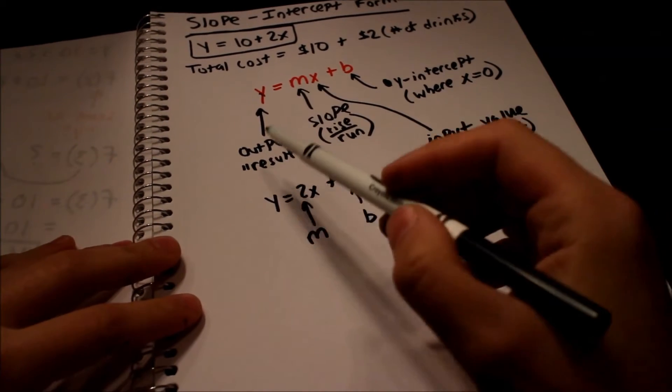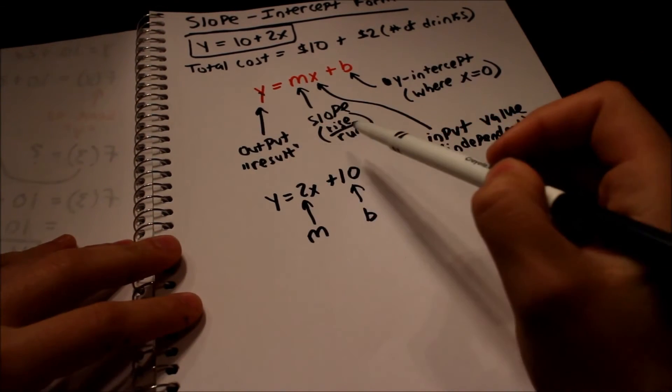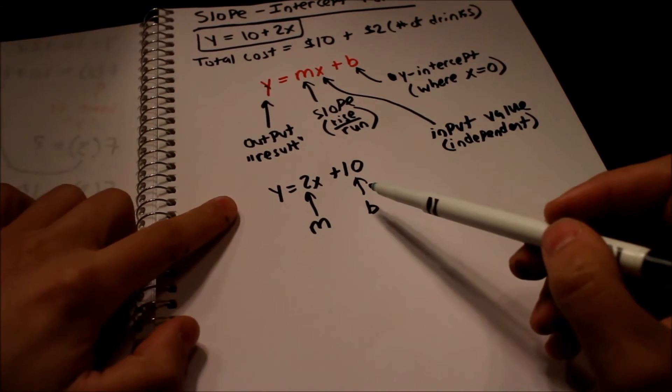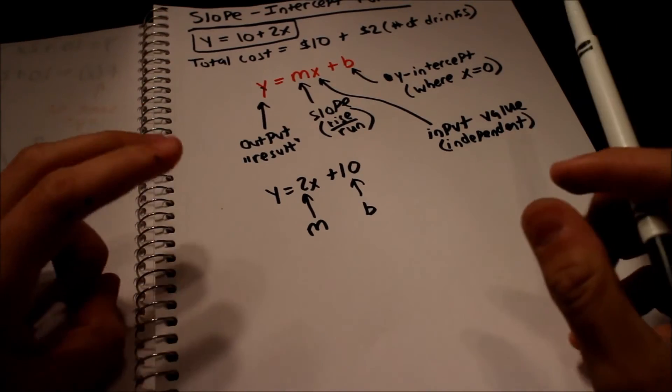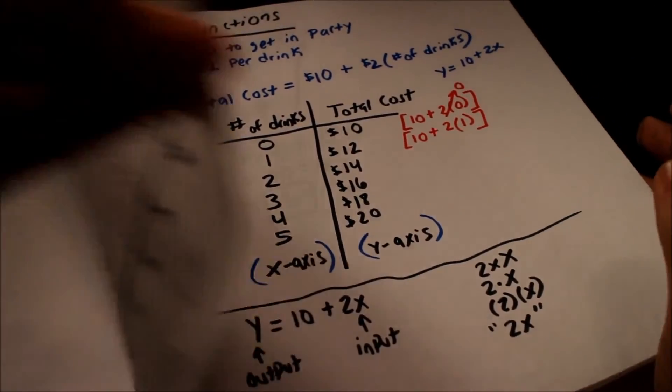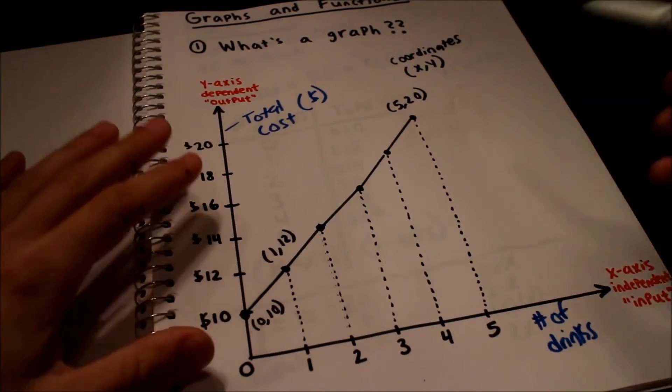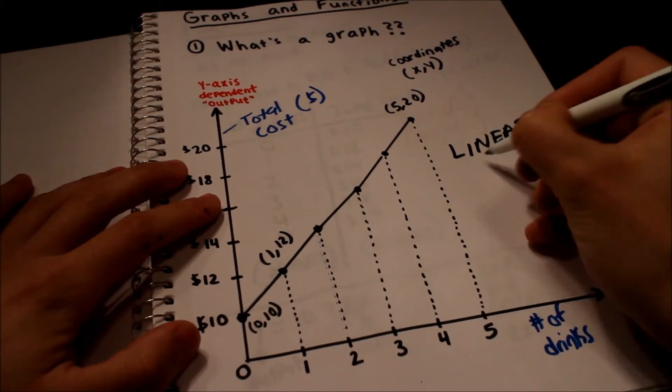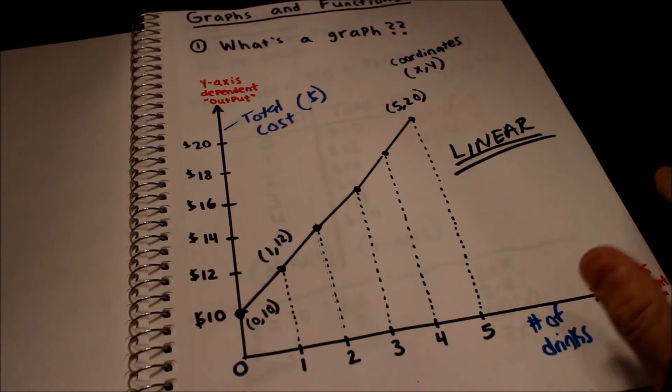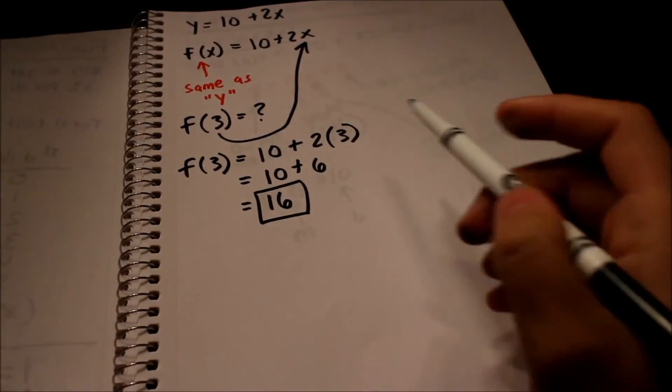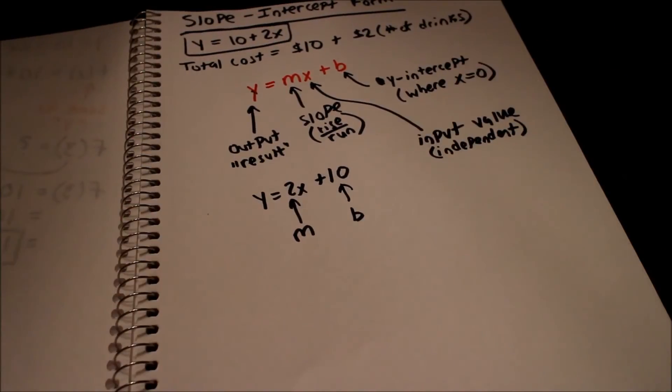So y equals mx plus b. Y is the output, slope is m, x is our input and b is the y intercept. We actually did that on that other example. This is sometimes called a linear equation because the graph that it creates like we saw on the other video is a straight line. It's linear. It's written like this, L-I-N-E-A-R. Linear because it's in slope intercept form. Slope intercept form is any equation that looks like that, y equals mx plus b.